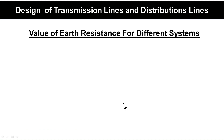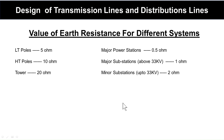Value of earth resistance for different systems: For LT poles, the earth resistance value should be around 5 ohms. For HT poles, it should be about 10 ohms. For towers, it should be around 20 ohms — not more than 20 ohms. For major power stations, the earth resistance should be up to 0.5 ohms. For major substations above 33 kV, it should be 1 ohm. For minor substations at or below 33 kV, the earth resistance should be 2 ohms.